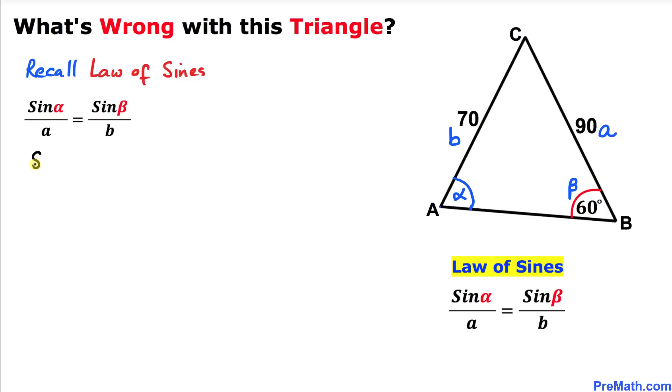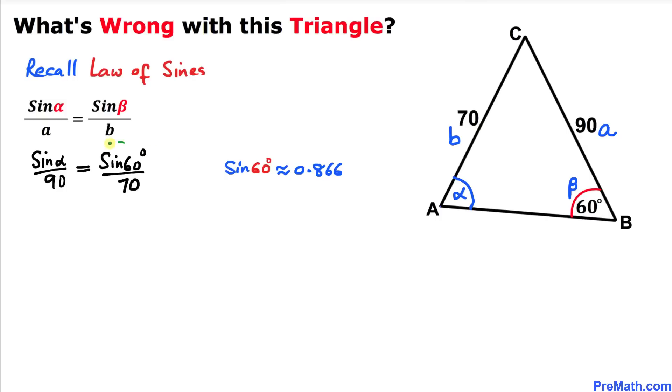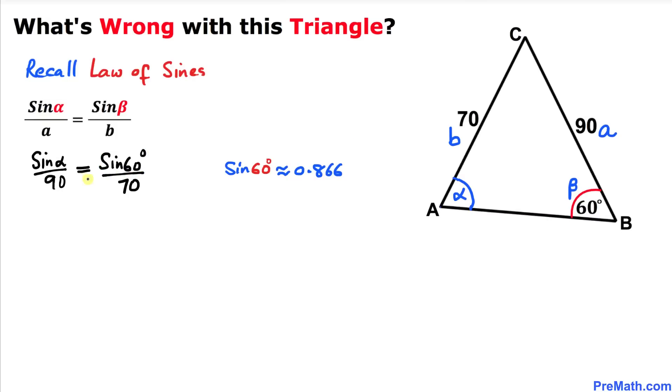So let's plug it in. Sine of alpha divided by 90 equals sine of 60 degrees divided by 70. If we use a calculator, we know that sine of 60 degrees is approximately equal to 0.866. So we can write sine of alpha divided by 90 equals 0.866 divided by 70.